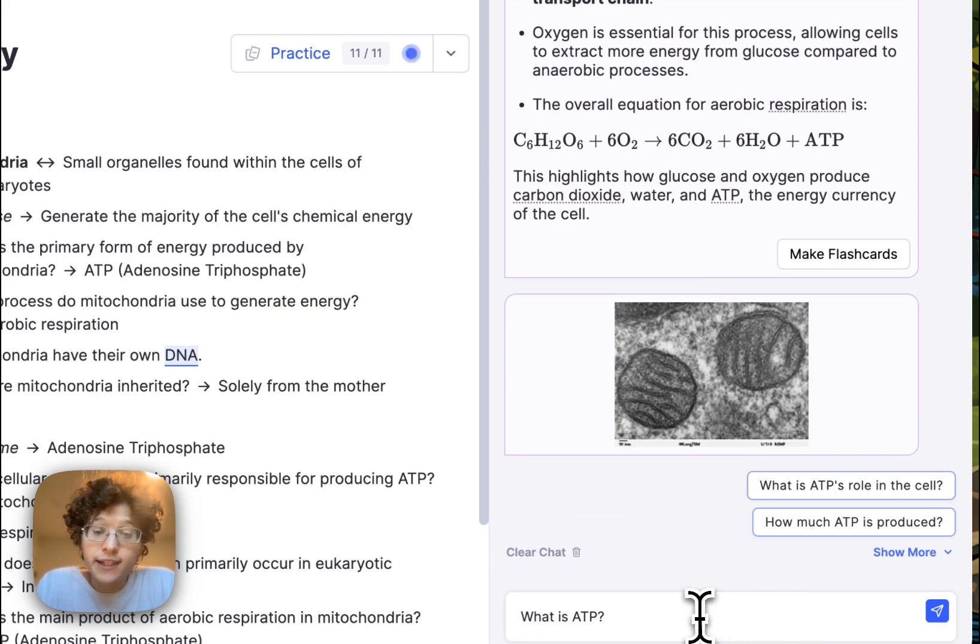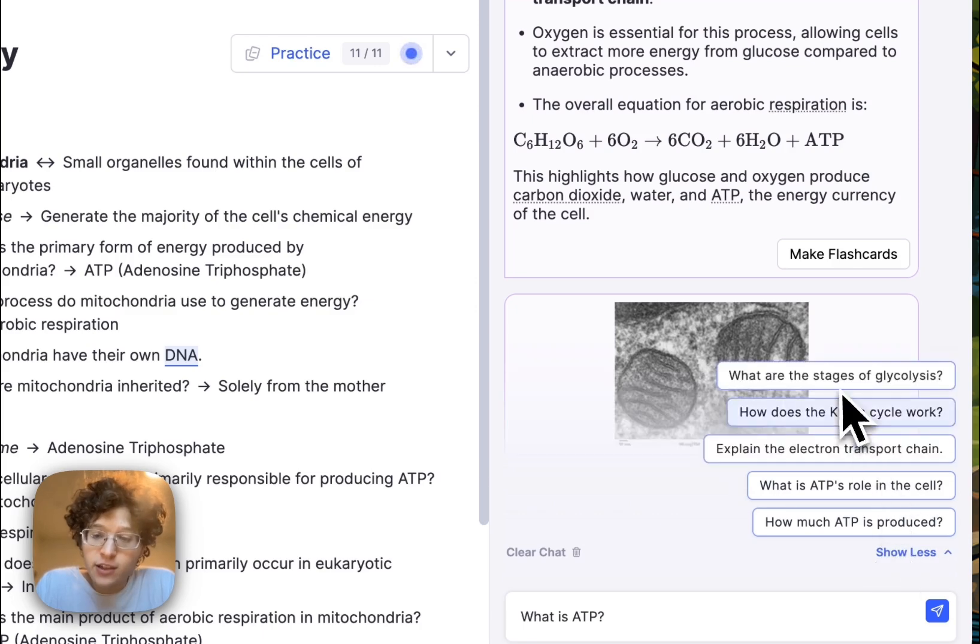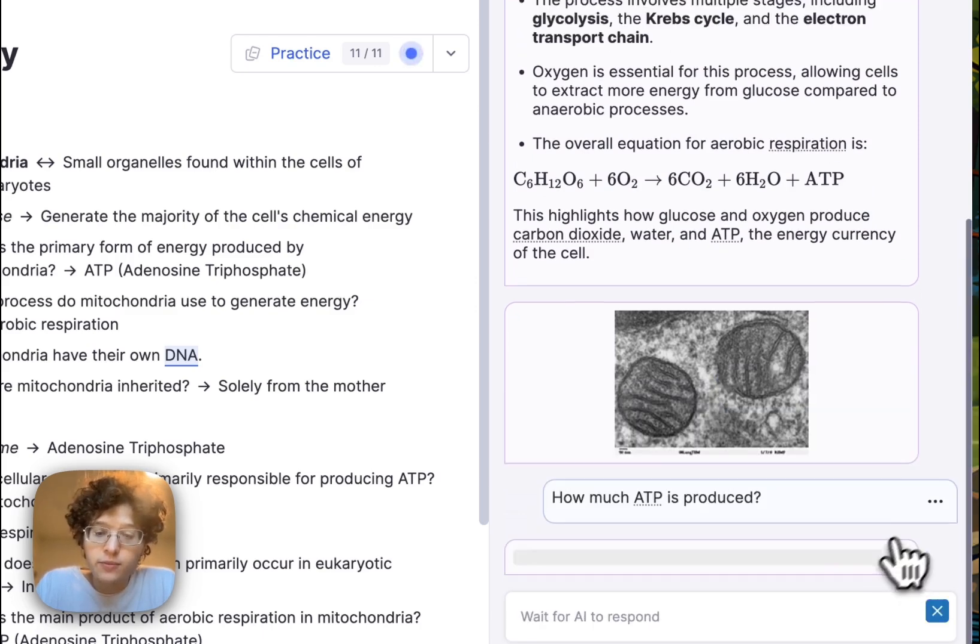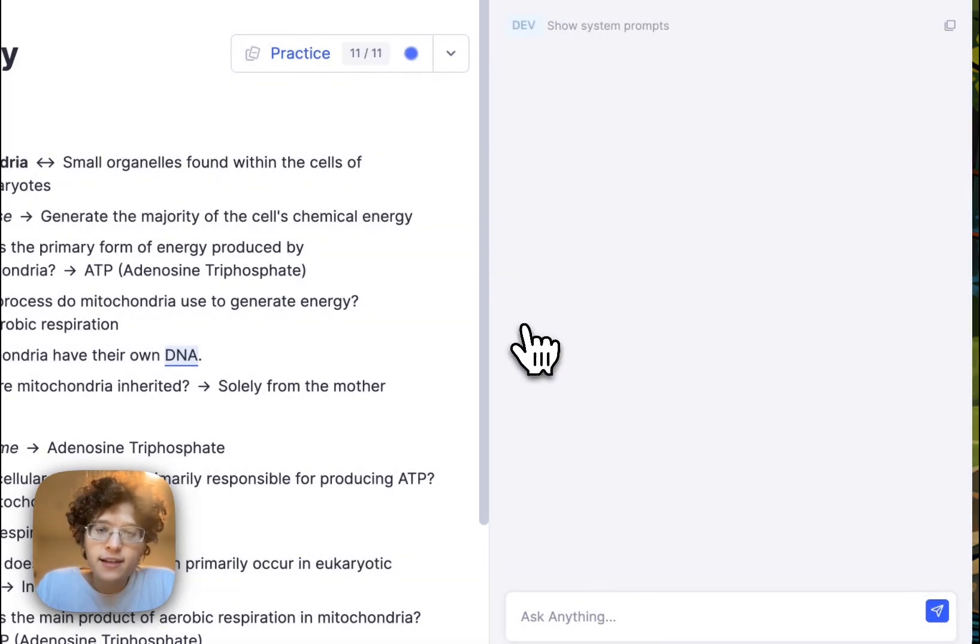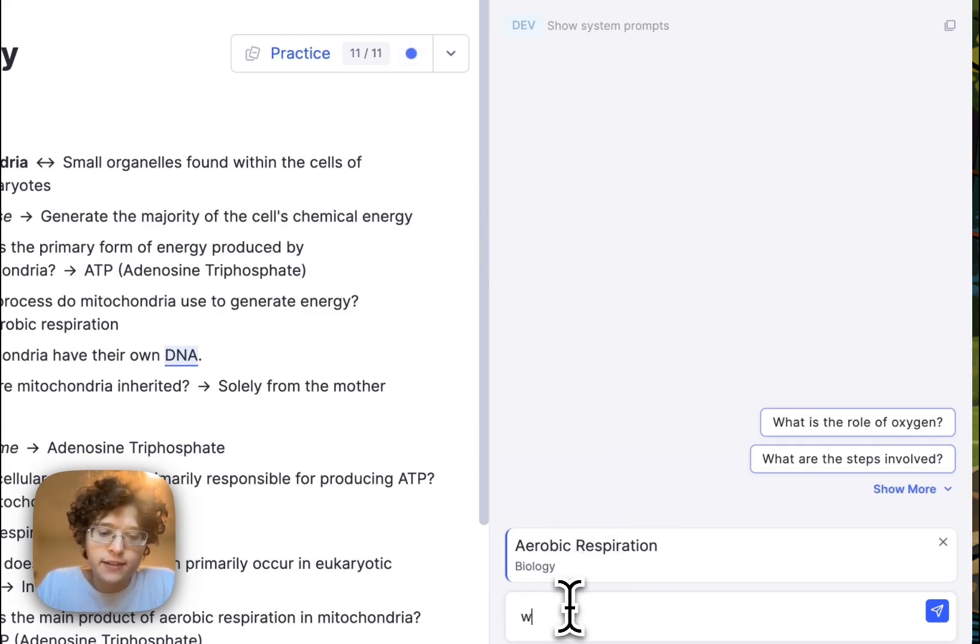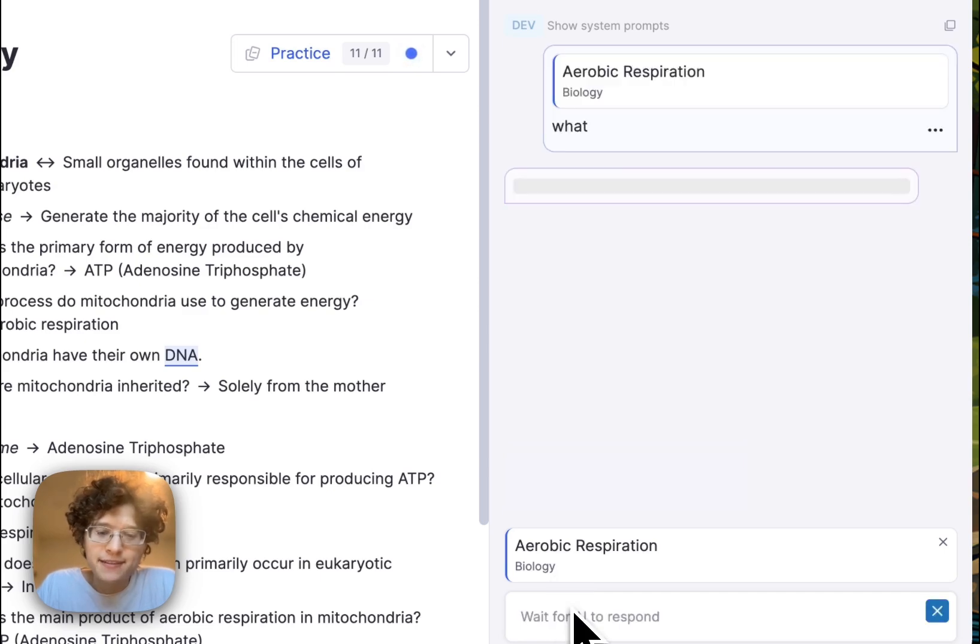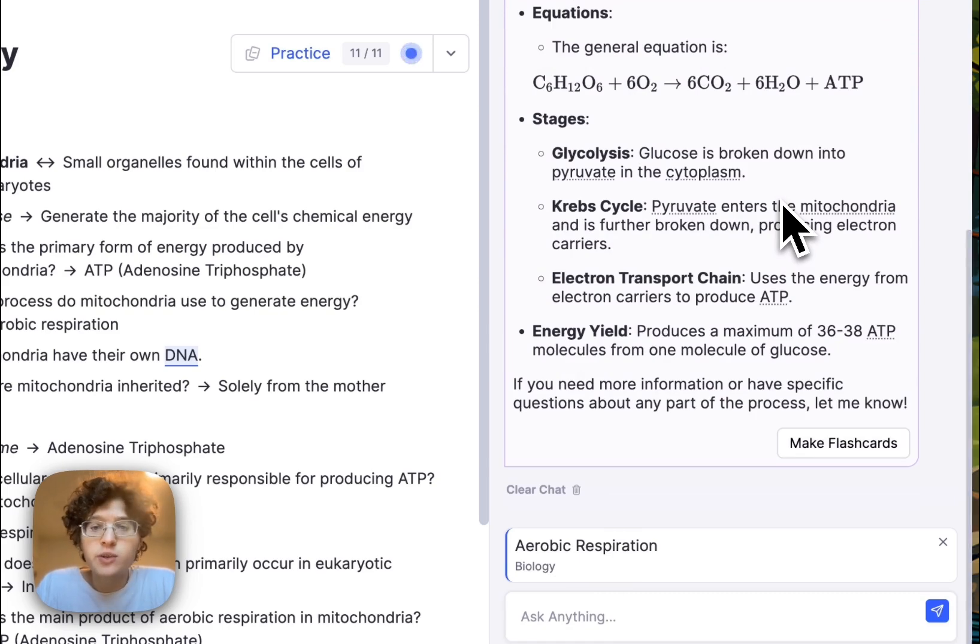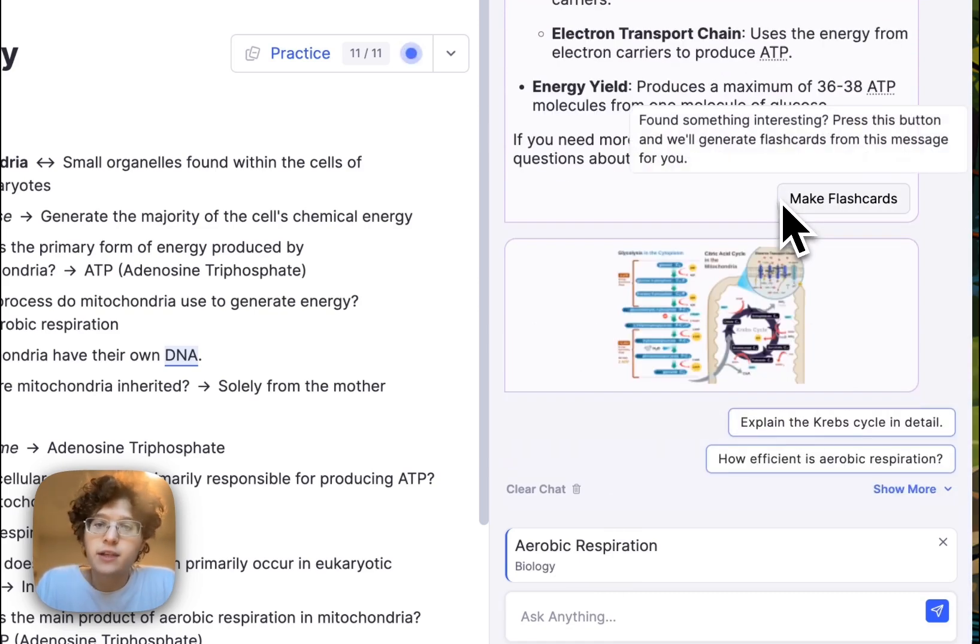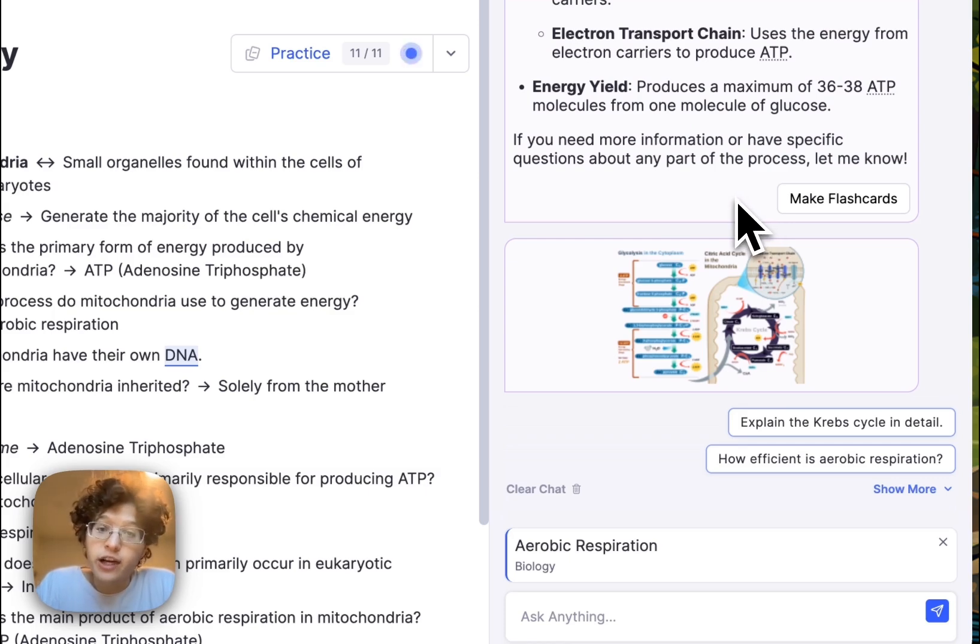For example, I could drill down into asking what ATP is, or I could use one of the automatically suggested questions and just click on one of those directly. You can type very informally with the chat here because it has the context of your editor. For example, if I click on aerobic respiration here, you can see that that context is automatically being provided to the tutor. So if I just ask it what or explain or something, then you can see that it automatically understands what I'm talking about. There's no need to switch between different tools and risk potentially losing your flow or getting distracted.